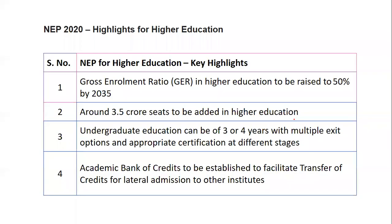Let's start the session with the New Education Policy 2020. We will first see the highlights of this policy. These questions frequently appear in the question paper. One important highlight is the gross enrollment ratio — there have been previous year questions on this, including its formula and percentage. The gross enrollment ratio in higher education is to be raised to 50% by 2035.